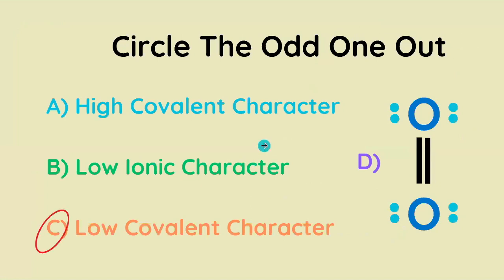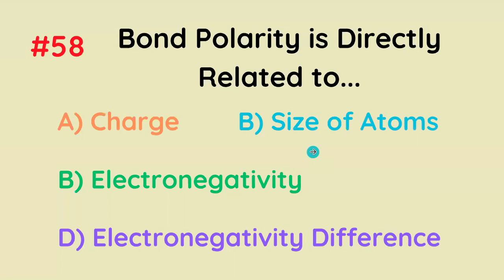Circle the odd one out. The correct answer is low covalent character, because this bond is perfectly covalent, which is also very low in ionic character, so it's got very low ionic character. Bond polarity is directly related to what? The correct answer is electronegativity difference, because it takes two atoms of varying electronegativities to shift the electron density one way or the other.